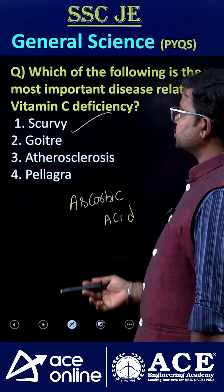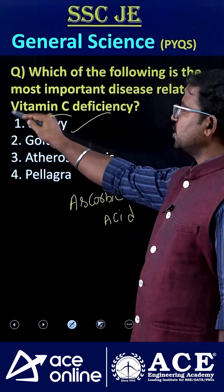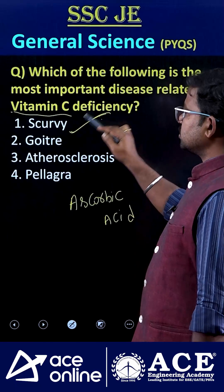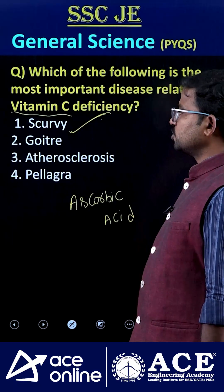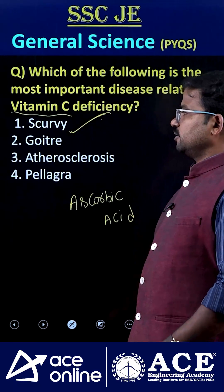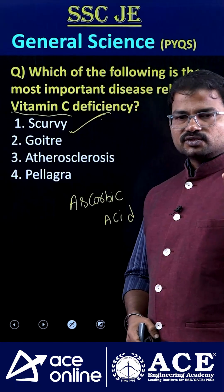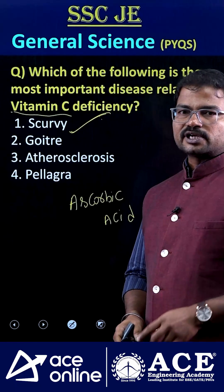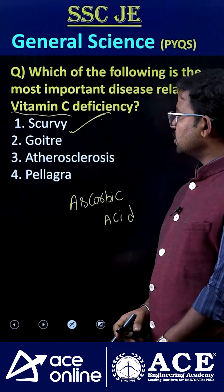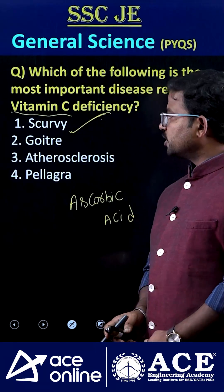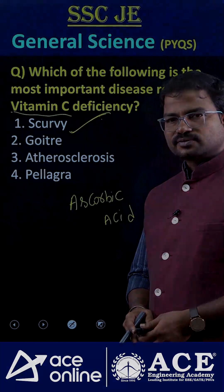Scurvy is caused by the deficiency of vitamin C only — that's why the correct answer is option one. As for goiter, which deficiency is responsible for causing it? If you know the answer, please comment. Thank you.